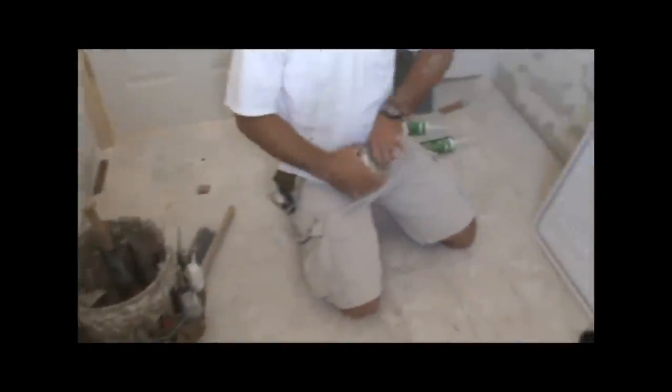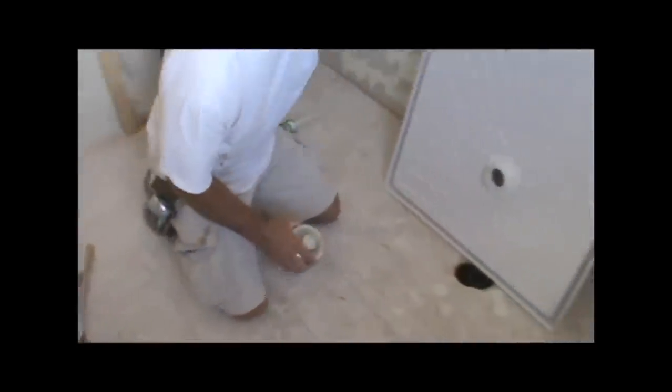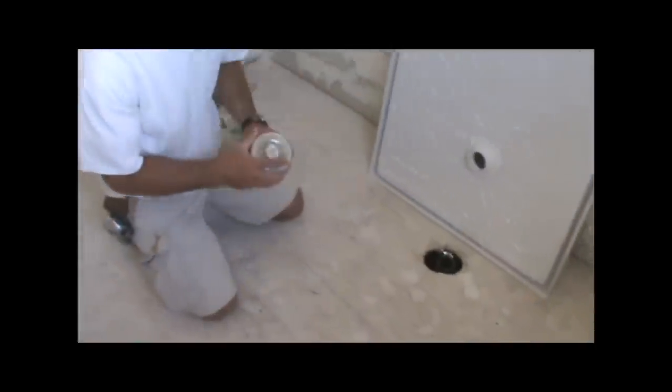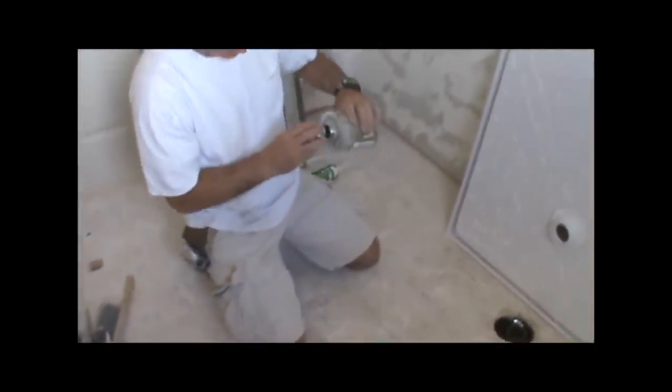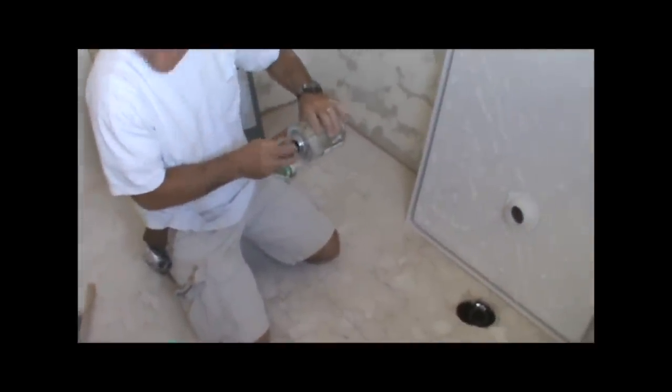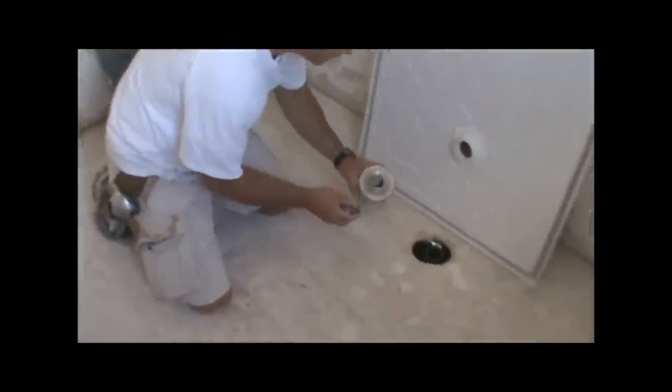Once you have that, then you get your glue. Because the glue sets up pretty fast, you want to make sure everything is ready to go down before you get to this point. Then you want to just go around both the drain and the pipe too.